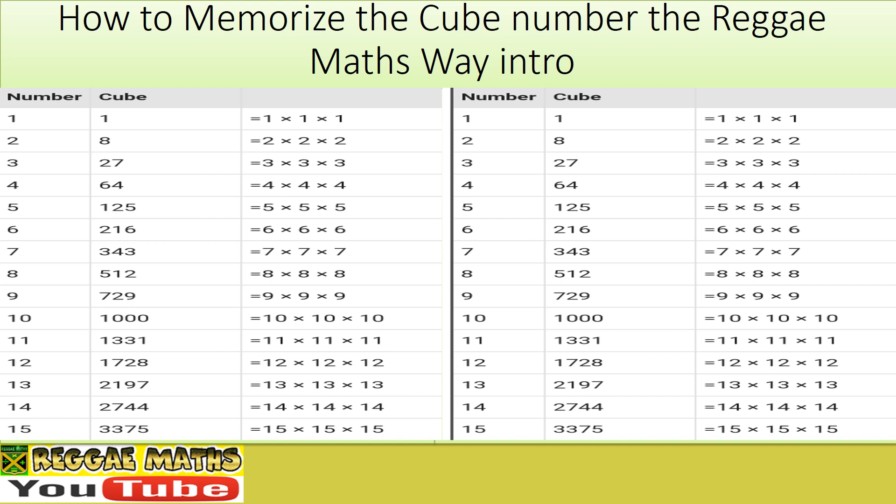The cube of two is two times two times two, equal to eight. The cube root of eight is two.